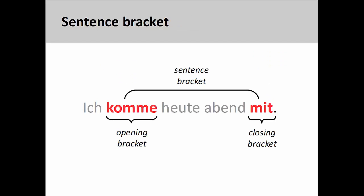This sentence illustrates the concept of the sentence bracket. The opening bracket, as we see here, is a verb, and the closing bracket is part of the verb or a verb form. You will see this structure employed many times in German sentences, so it is important to become very familiar with it.